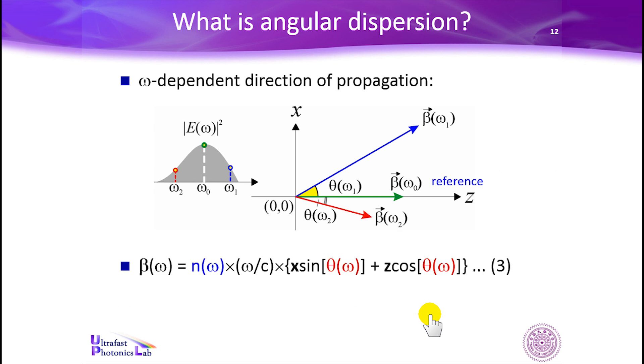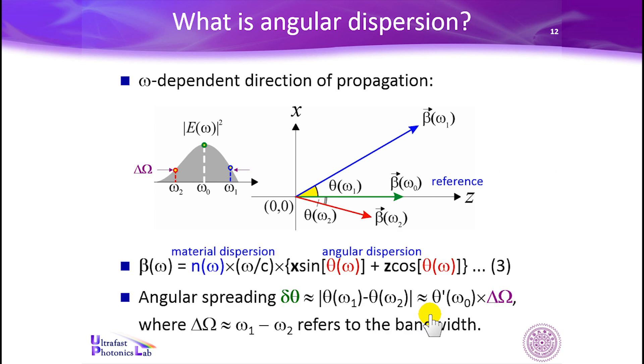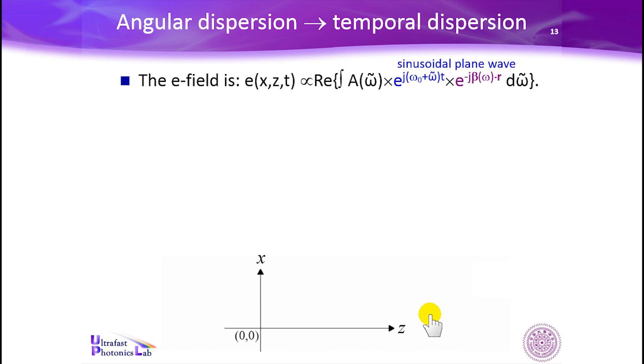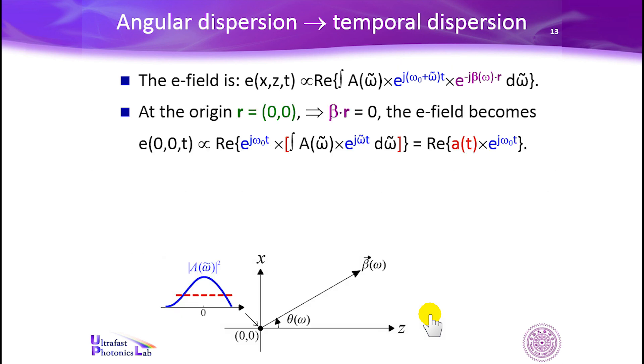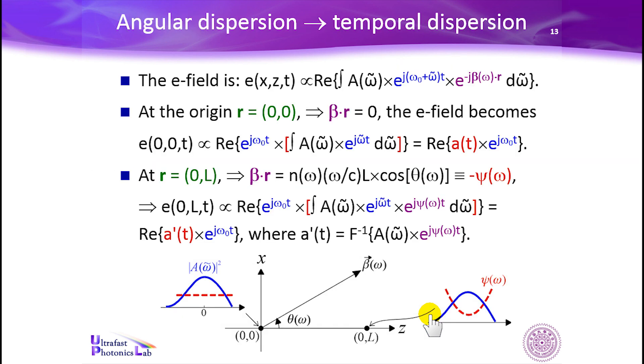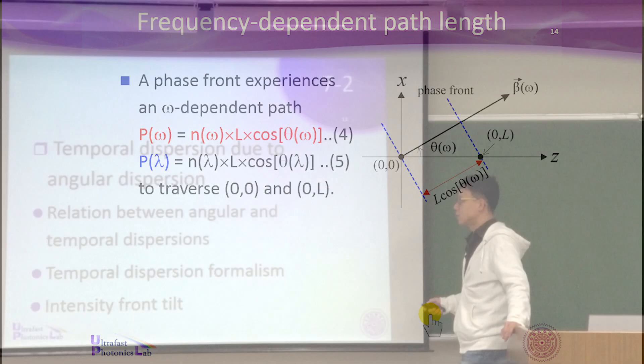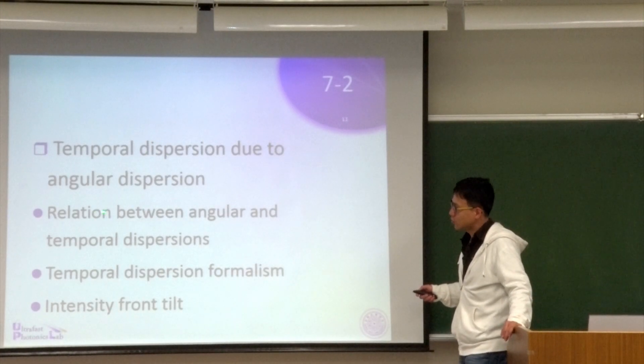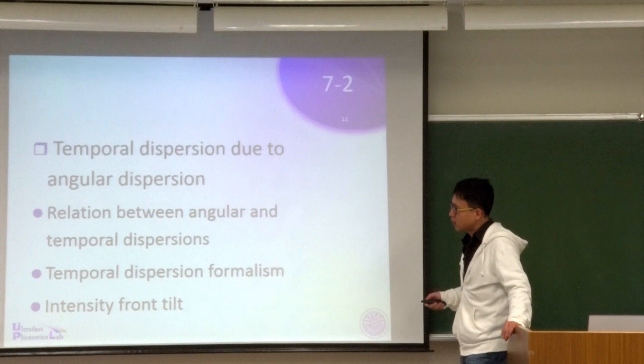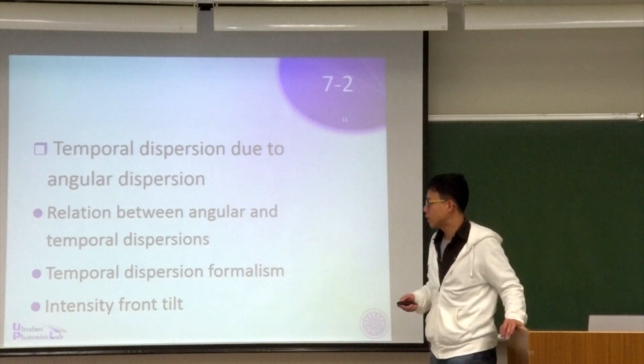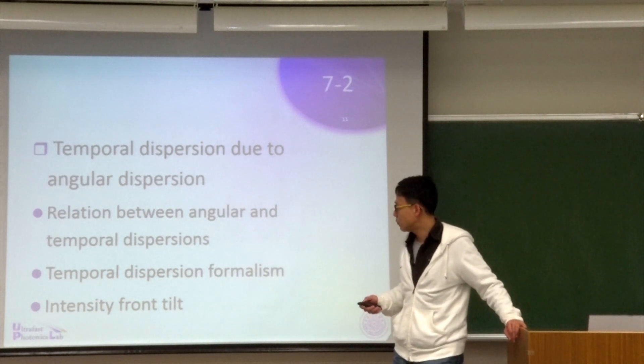Okay, in this section we will introduce a new concept, the angular dispersion. And actually, it's related to the temporal pulse chirp of our interest. So let's start with the relation between angular and temporal dispersions and derive some critical temporal dispersion formulas.